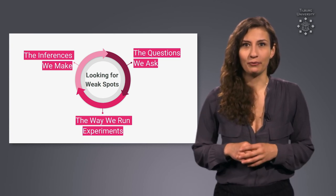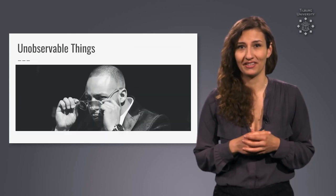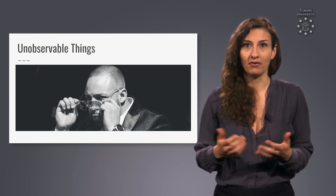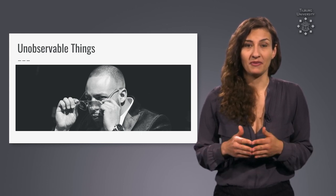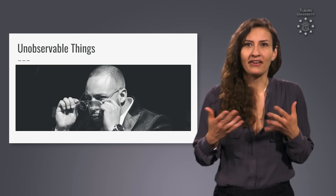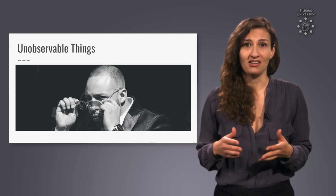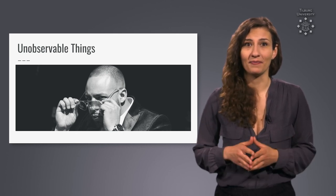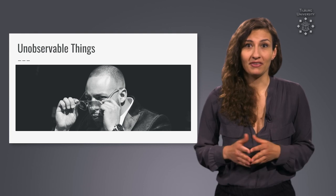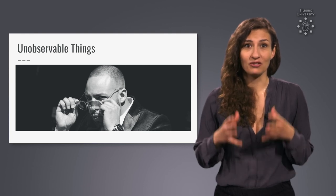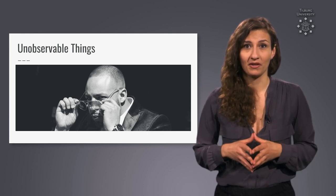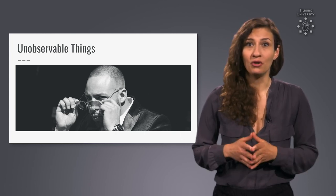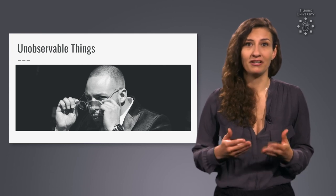Let's get started with looking at the kinds of questions we ask. Here's a problem for our approach of studying things by empirics. How do you deal with things that you can't see — that are unobservable, like an attitude, a personality characteristic, pain, love, etc.? This is a problem that largely the social sciences face. Many of the things we want to study in political science, sociology, or psychology are not readily observable.